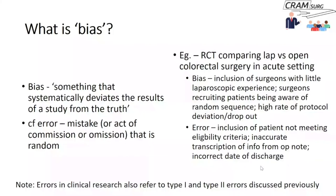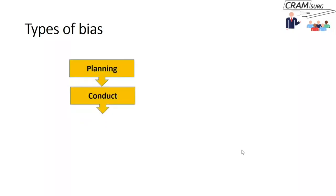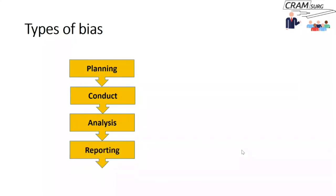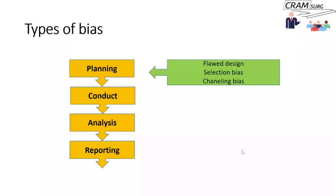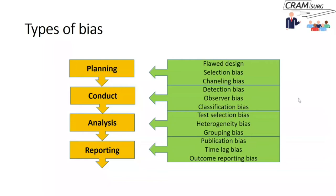Bias can occur at any stage in a trial — from planning, through conduct and analysis, to reporting. At the design stage, a flawed study design such as choosing a case-control study when you really need relative risk is a design bias. Detection bias can occur when radiologists interpreting images lack a clear understanding of study requirements and their interpretations aren't validated. During analysis, grouping bias occurs if you don't analyze patients according to the arm they were randomized to — the intention-to-treat principle. In reporting, publication bias arises because studies with negative or unexciting results struggle to get published, which can skew meta-analyses if unpublished negative studies are missed.